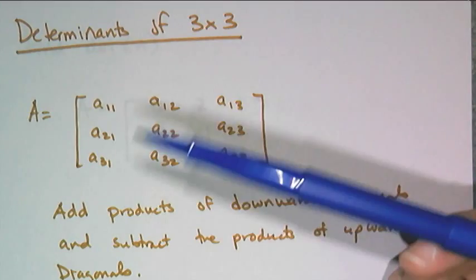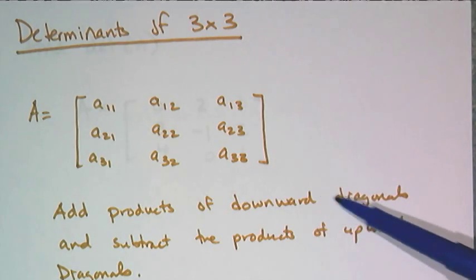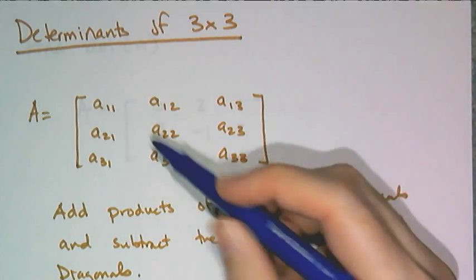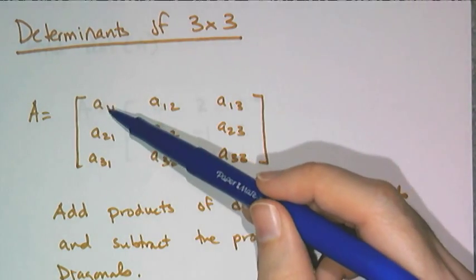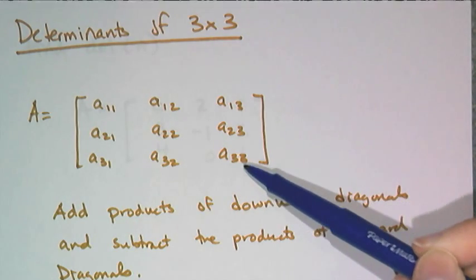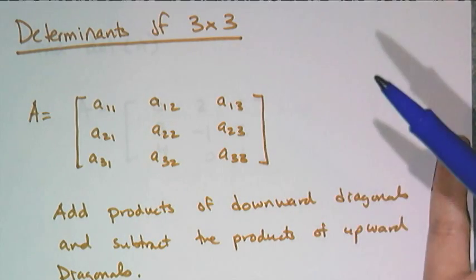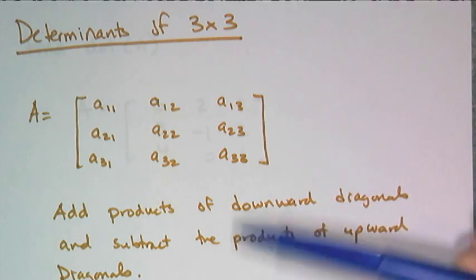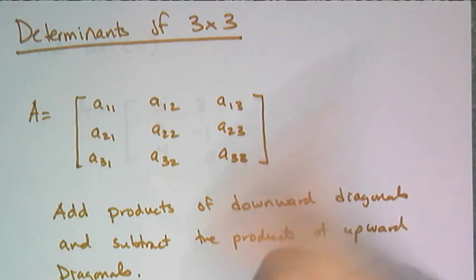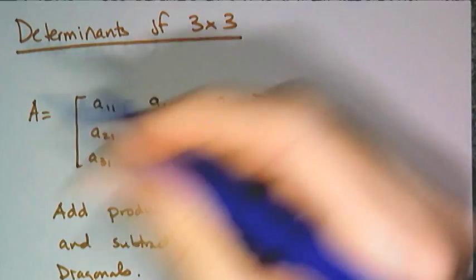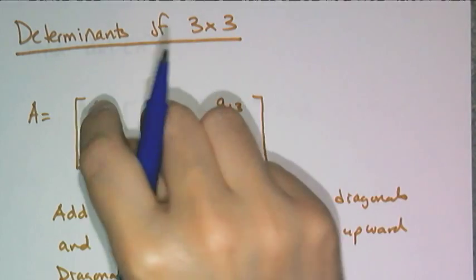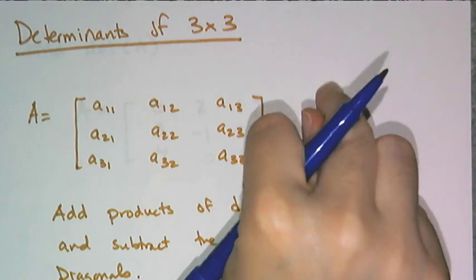The procedure is to add the products of the downward diagonals and subtract the products of the upward diagonals. Now downward diagonal is the traditional diagonal, like the main diagonal, the A11, A22, A33. You're thinking, well, there's only like one diagonal, so why does it say add the products of them? Well, that's because in order to find the determinant of a 3 by 3 matrix, you have to create more diagonals.